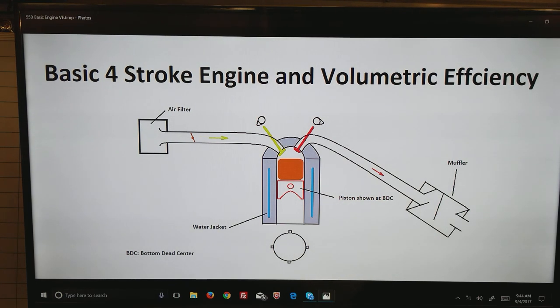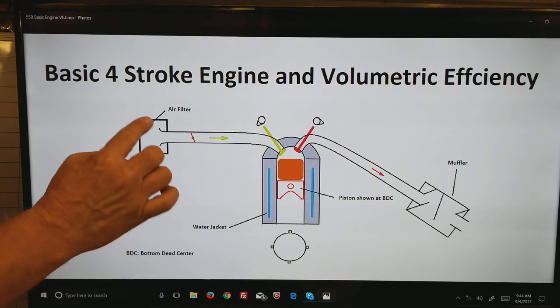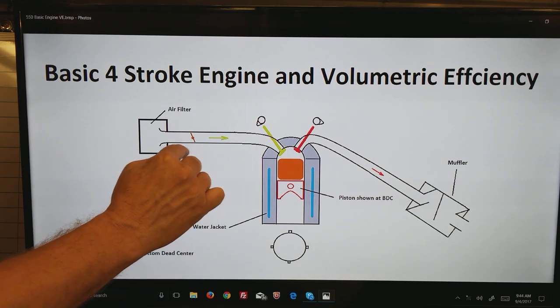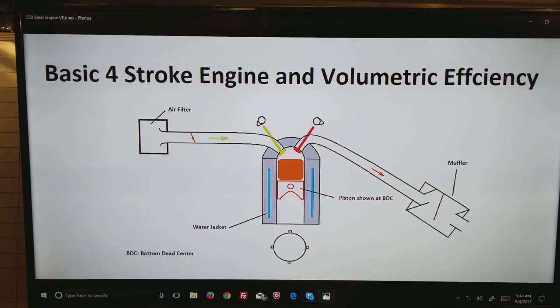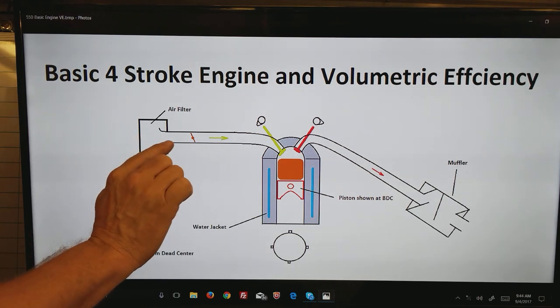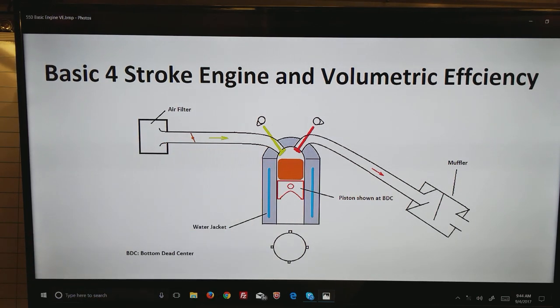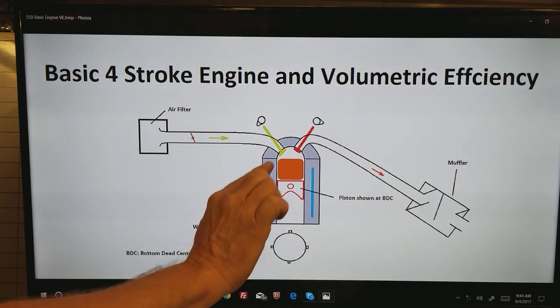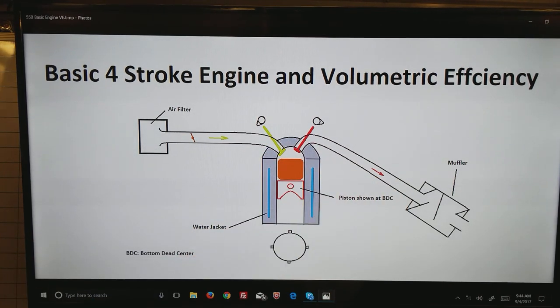So now let's look at the basic four-stroke engine. We have drawn here an air filter, a throttle body—we'll get into that later—that controls the airflow through the motor. It goes along the green line into the combustion chamber. Piston runs up and down, pulling air in and out of the chamber. You have your cams, valves, and exhaust system with a muffler at the end.